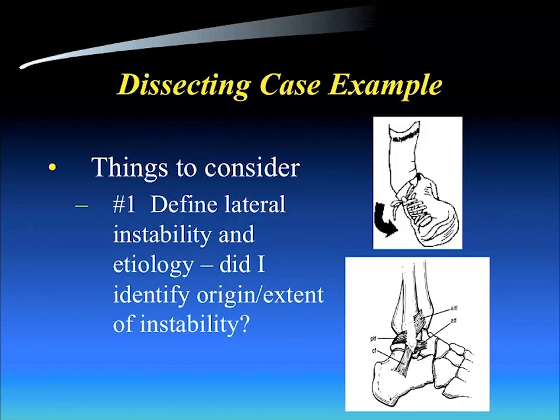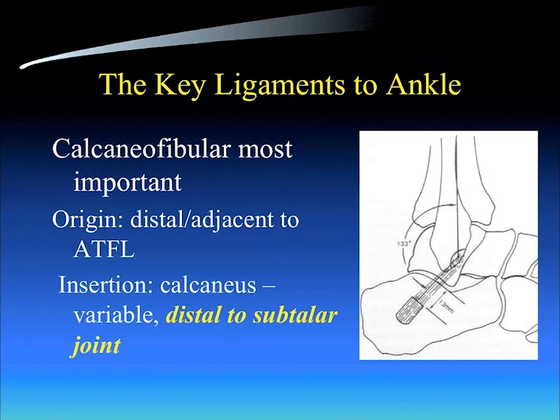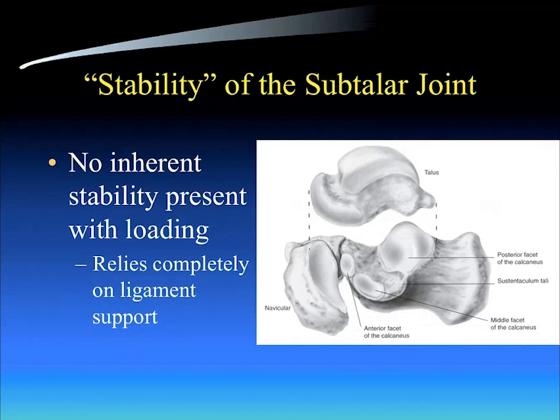First, you have to define lateral instability and its etiology. Did I really determine how much instability this athlete had? Did it come from the ankle, the subtalar, or a combination? When you think about the anatomy, the calcaneofibular ligament is the most important ligament on the lateral side. It goes from the fibula to the calcaneus, and that calcaneal insertion is distal to the subtalar joint. So it not only imparts stability to the tibiotalar joint but also to the subtalar joint.